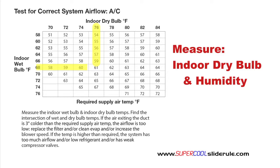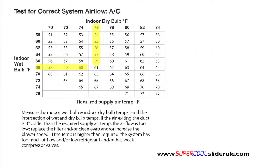Find the indoor dry bulb temperature and the indoor wet bulb temperature. Find where these two correspond. At the intersection of those is the required supply air temperature.